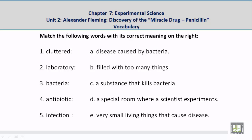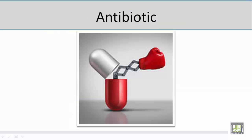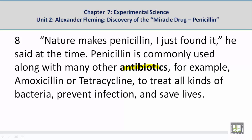Number 4: Antibiotic. The correct meaning is C — a substance that kills bacteria. Now let's take a look at a picture related to the vocabulary word "antibiotic." Student: In this picture I see a pill — a substance — and it's fighting the bacteria, the diseases. And that is what antibiotic means: a substance that kills bacteria. Paragraph reference: Penicillin is commonly used along with many other antibiotics, for example amoxicillin or tetracycline, to treat all kinds of bacteria, prevent infection, and save lives.